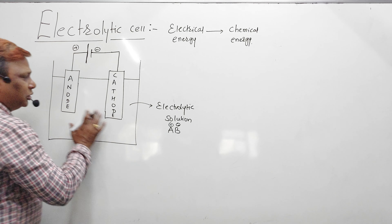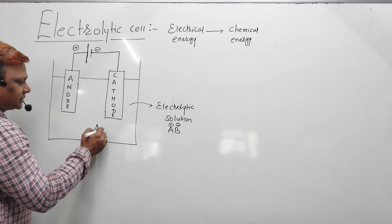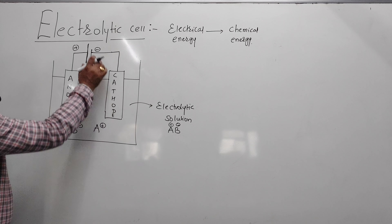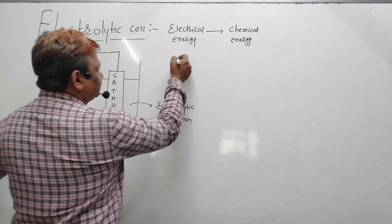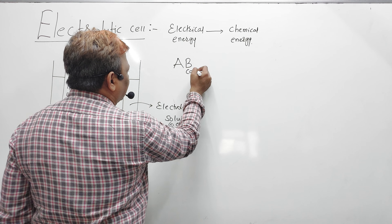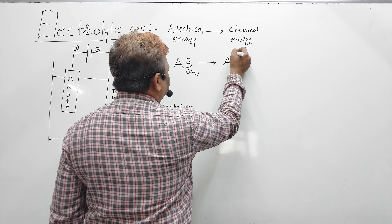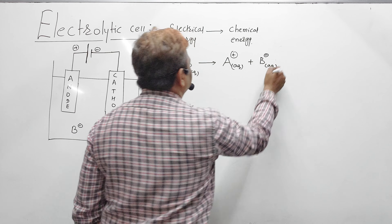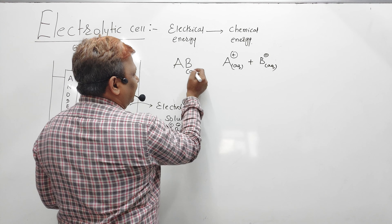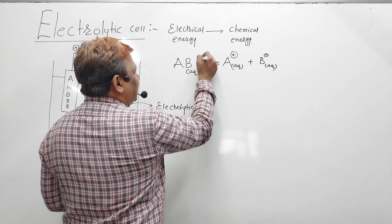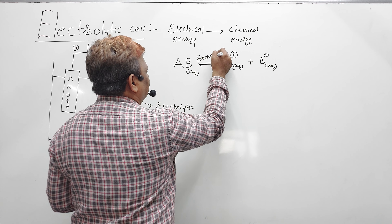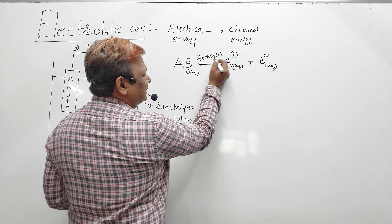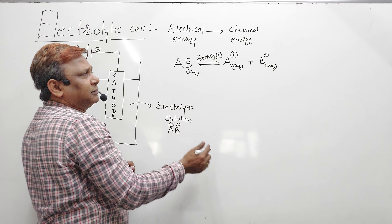Here A is positive and B is negative, so there are many ions. When you pass the current, your AB in aqueous form will break into A plus (aqueous) and B minus (aqueous). By passing current the compound decomposes — that breaking of the compound is called 'lysis'.